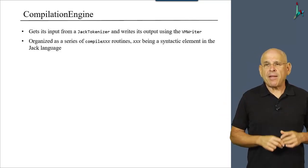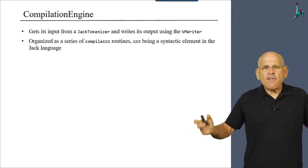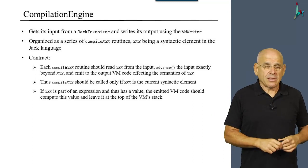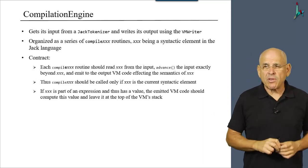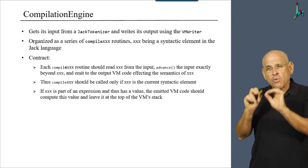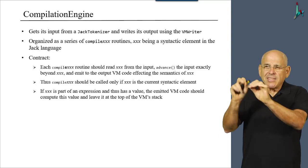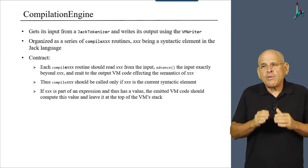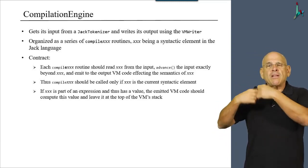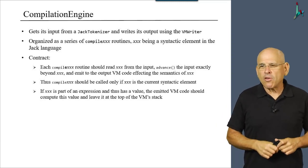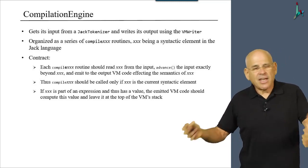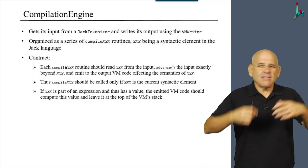XXX being a syntactic element in the Jack language. We have something like 15 such elements, so we'll have something like 15 such compile routines. And the contract among these routines, because they keep calling each other all the time, is that each compileXX routine should read the XXX construct from the input. It should advance the input exactly beyond XXX and then it will emit the output VM code which affects the semantic of XXX. XXX can be something like while, let, and so on.